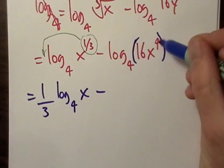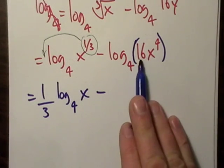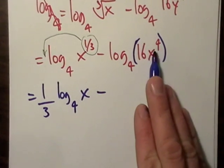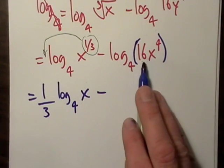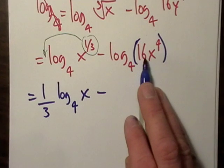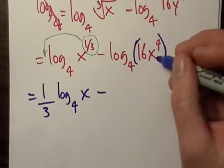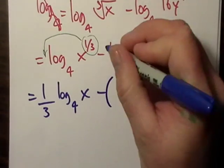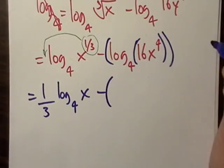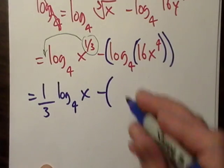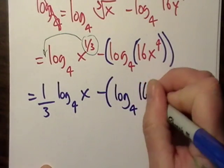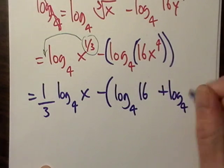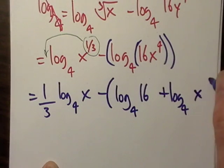I've got actually a product here as well, don't I? I have 16 times x to the fourth. And I've got a power, yes I do, but let's go ahead and let's do the product rule first. But we've got to parenthesize this. We'll get a log four of 16 plus log four of x to the fourth.